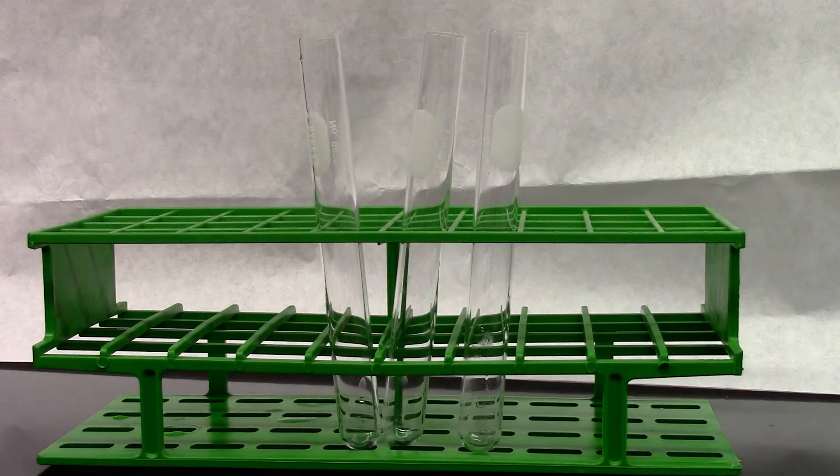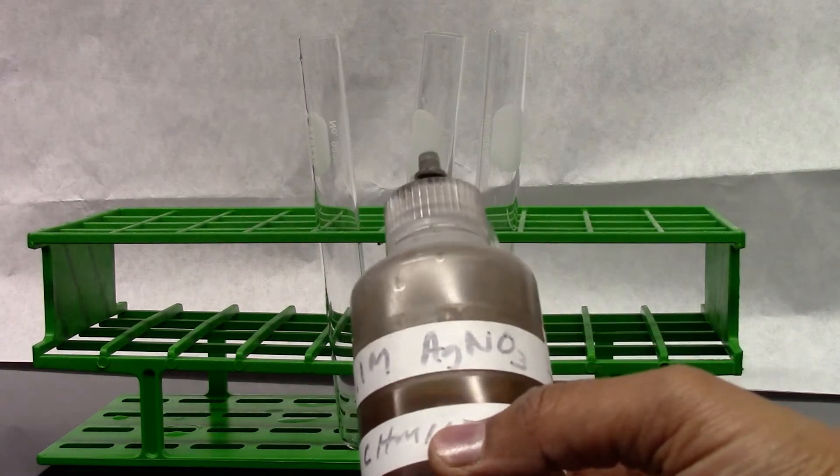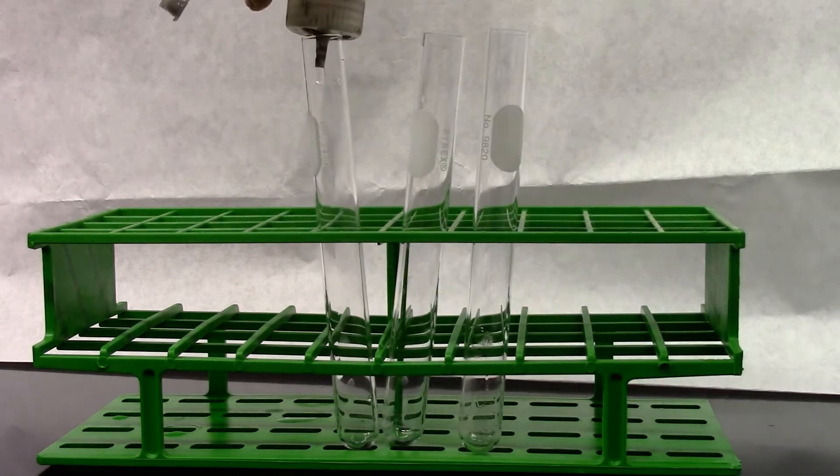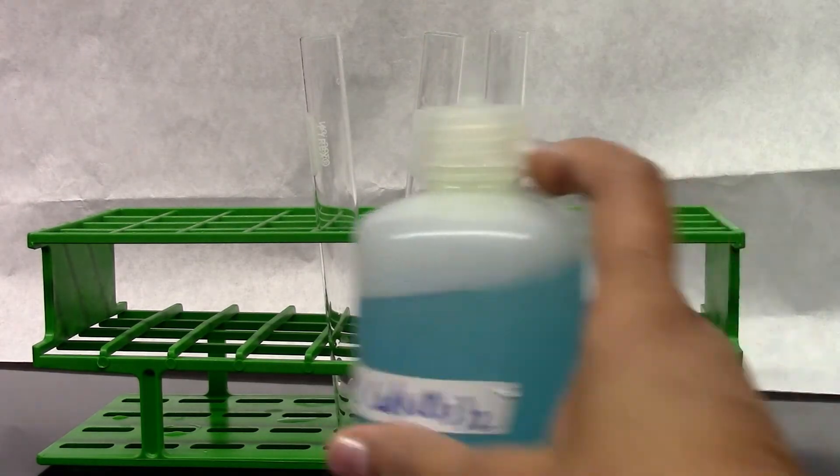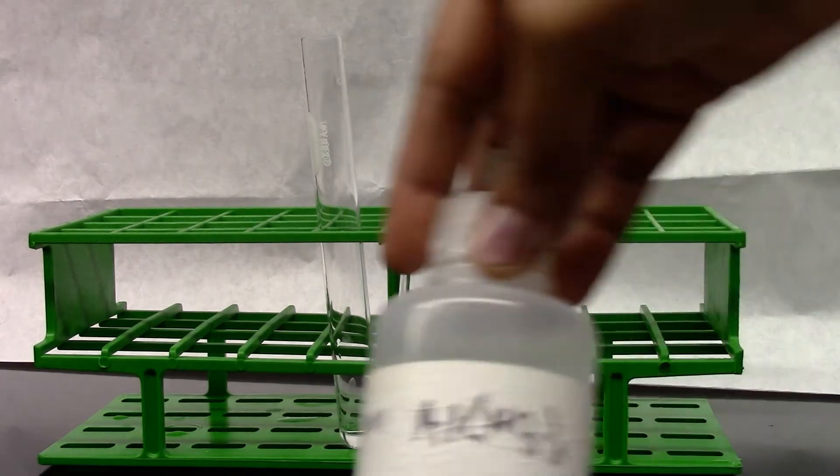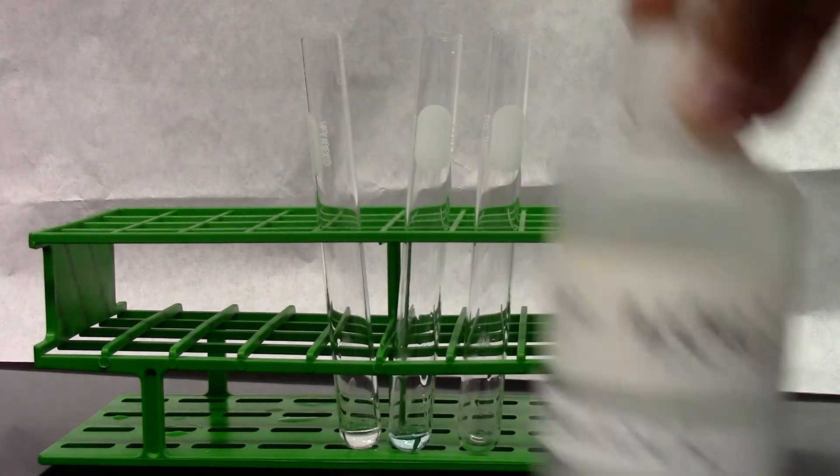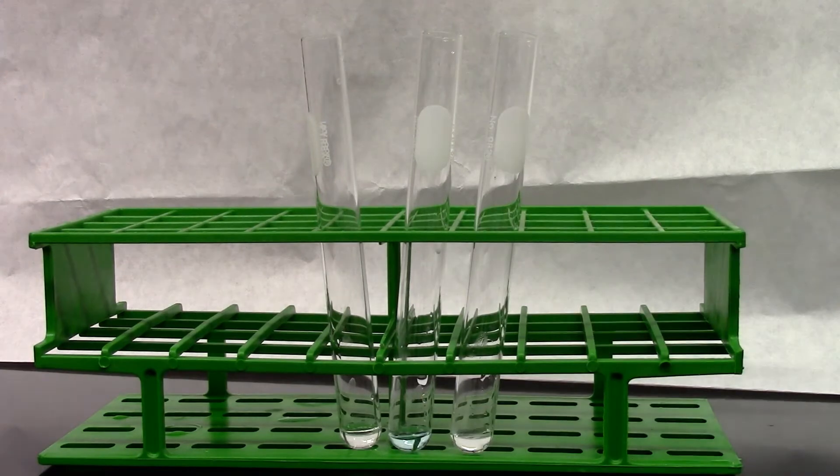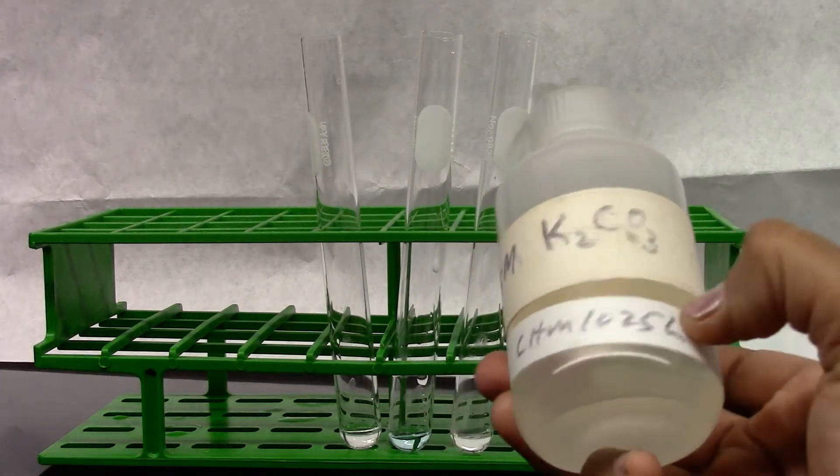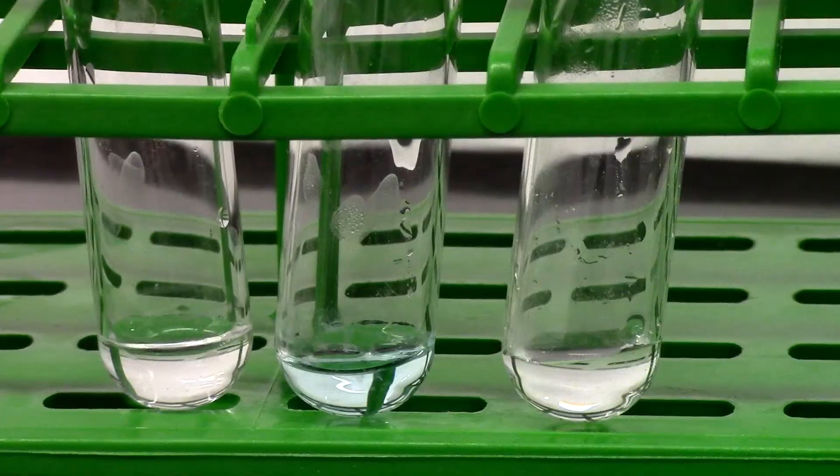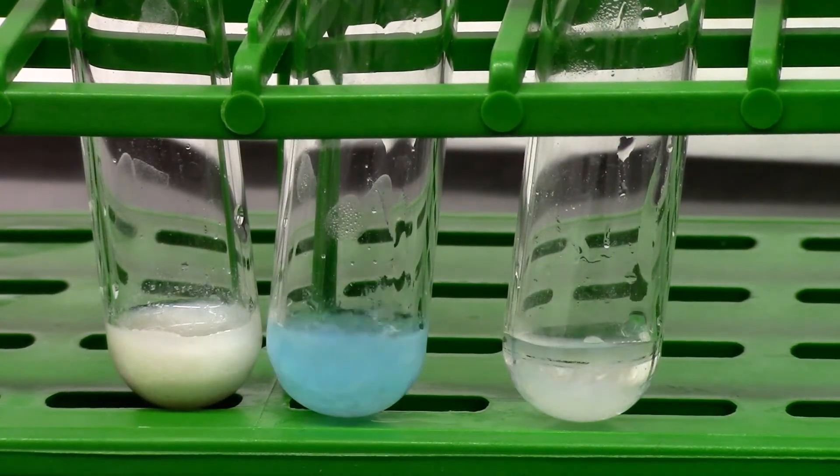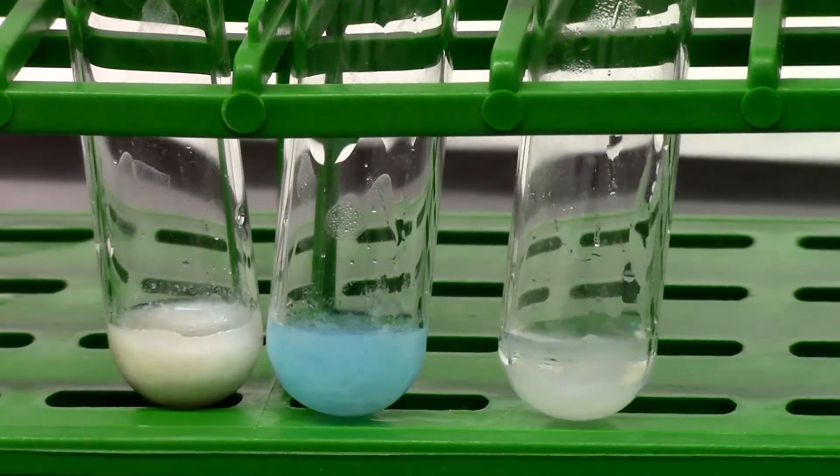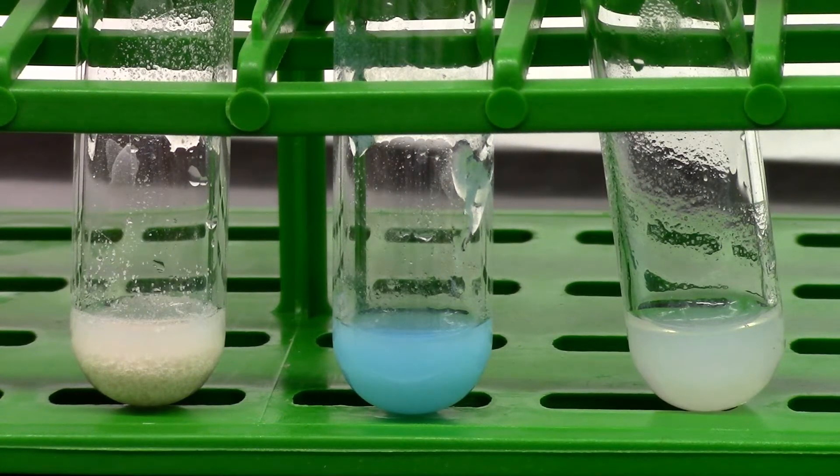So for part D I have three test tubes. The first one I'm going to add 10 drops of silver nitrate. The second test tube I'm going to add 10 drops of copper nitrate. The third test tube I'm going to add 10 drops of aluminum nitrate. To all these three test tubes I'm going to add a few drops of potassium carbonate. And all three solutions have precipitate.